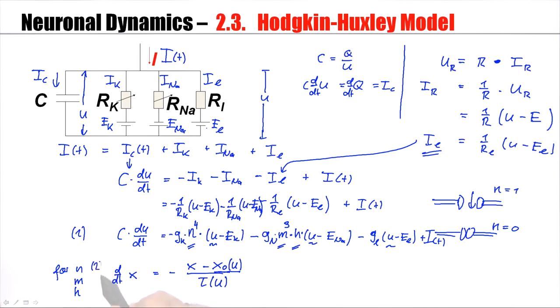And for N, there is an equation of this kind. For M, there is an equation of this kind. For H, there is an equation of this kind. So, in total, there are four equations which describe the Hodgkin and Huxley model.